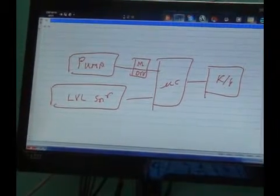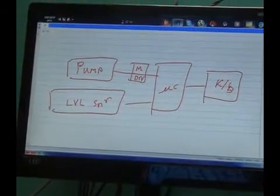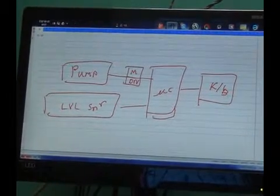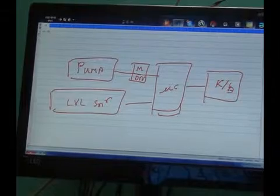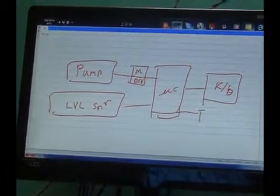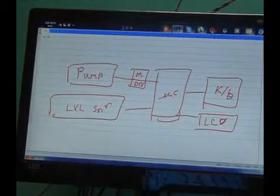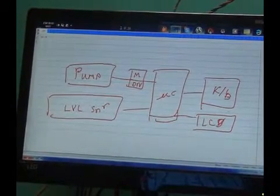And then there will be a keypad to enter the sequences or other programming settings. Most of the things will be automatically controlled, but if user has to override, you can connect an LCD to show the display to the user, showing the upper tank level and lower tank level.